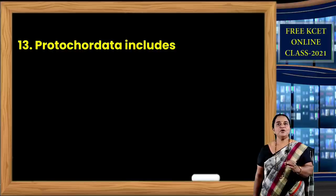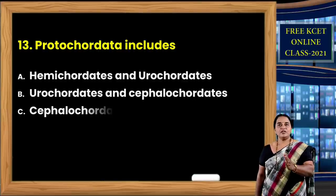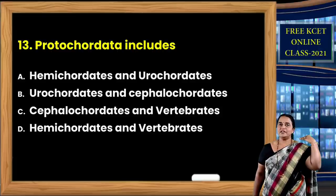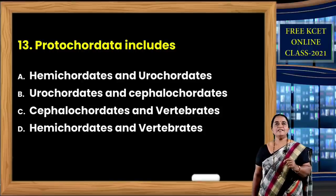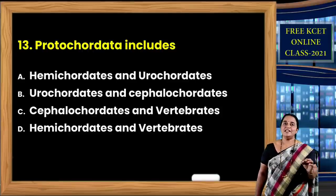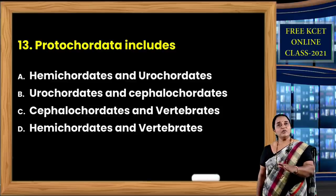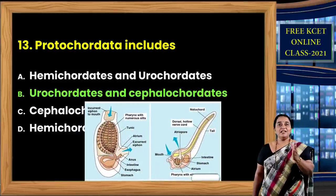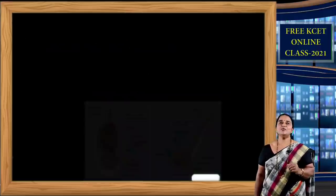Question 13: Protochordata includes — options: A) hemichordata and urochordates; B) urochordates and cephalochordates; C) cephalochordates and vertebrates; D) hemichordates and vertebrates. Remember: phylum 10 is hemichordata, which was earlier included among chordata but is now separated. So we should not include hemichordata under protochordata. Protochordata includes urochordates and cephalochordates. Correct answer is option B.